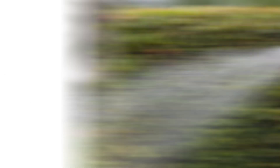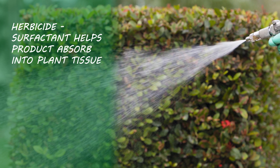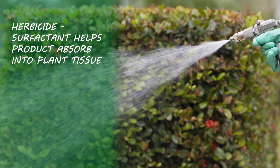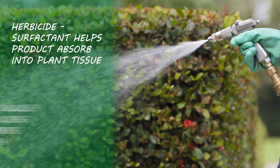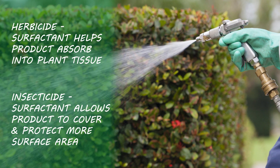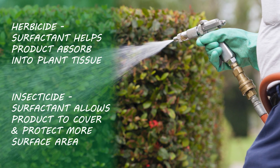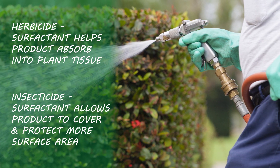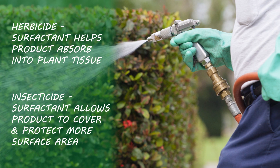In an herbicide application, a surfactant is used to help break down the plant's resistance in absorbing the chemical being applied to it. In an insecticide application, this ensures that the chemical is applied over the entire surface areas of plant leaves, leaving no safe spaces for insects to land.